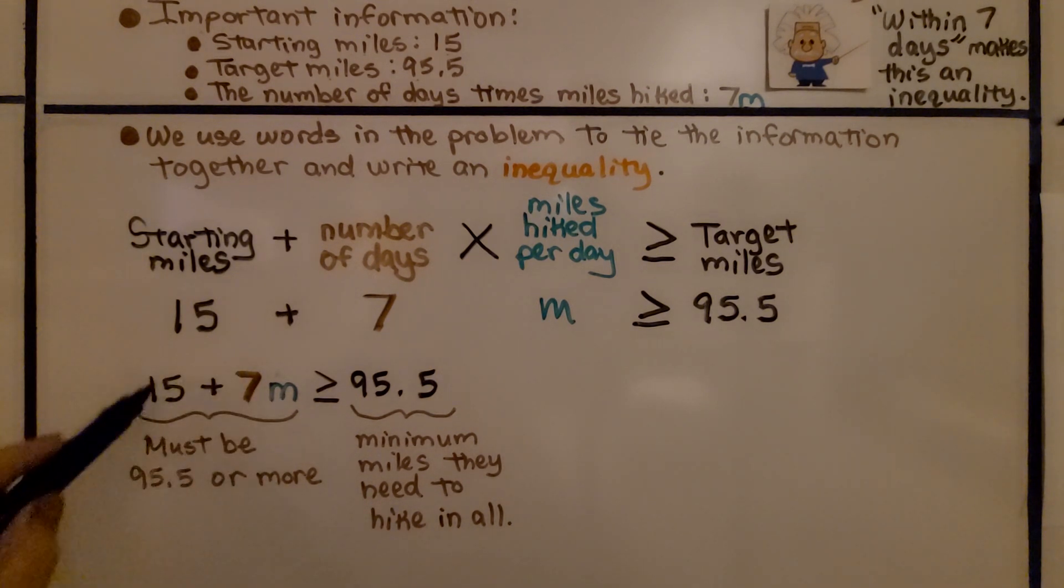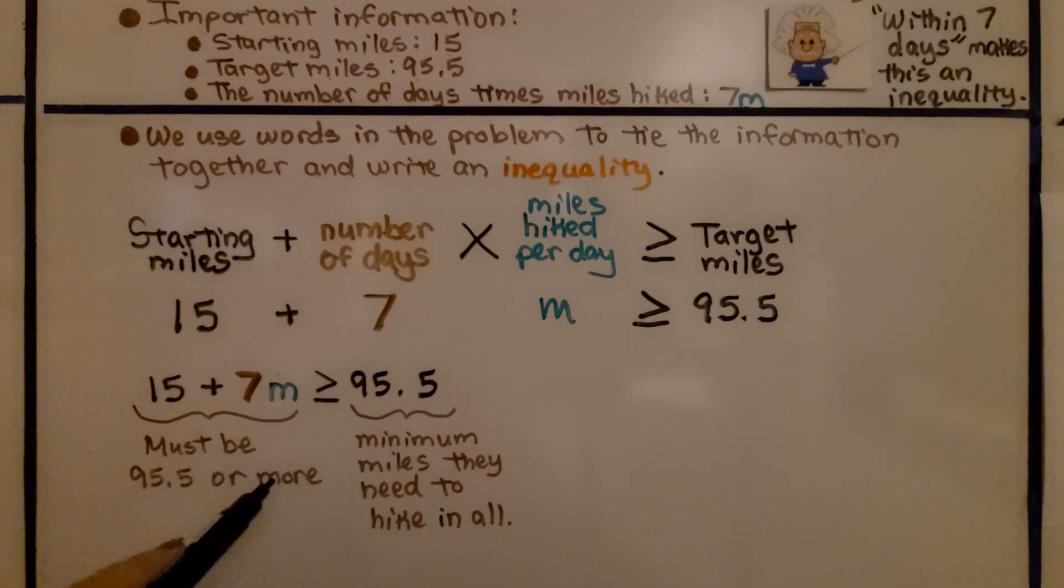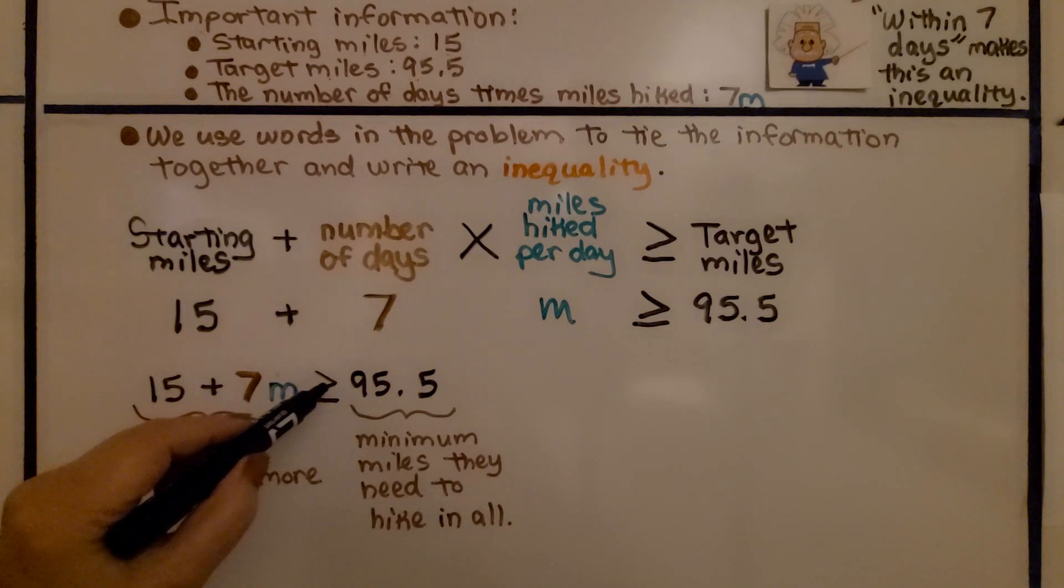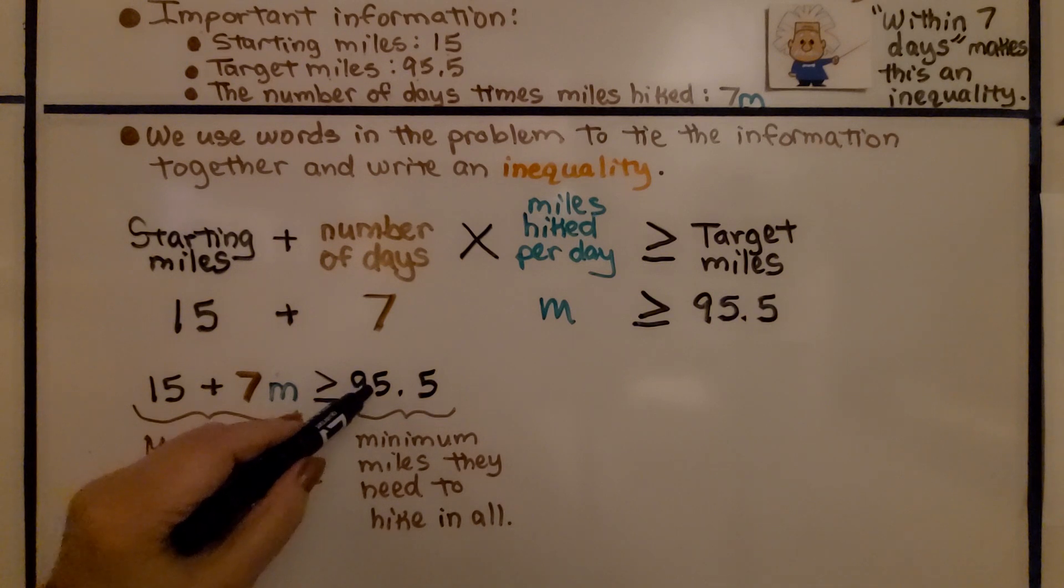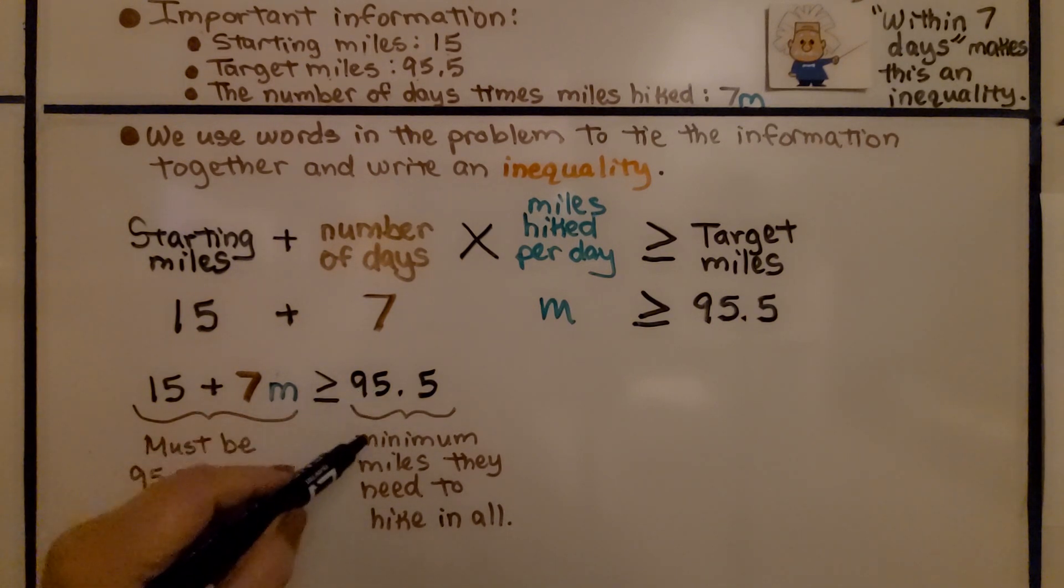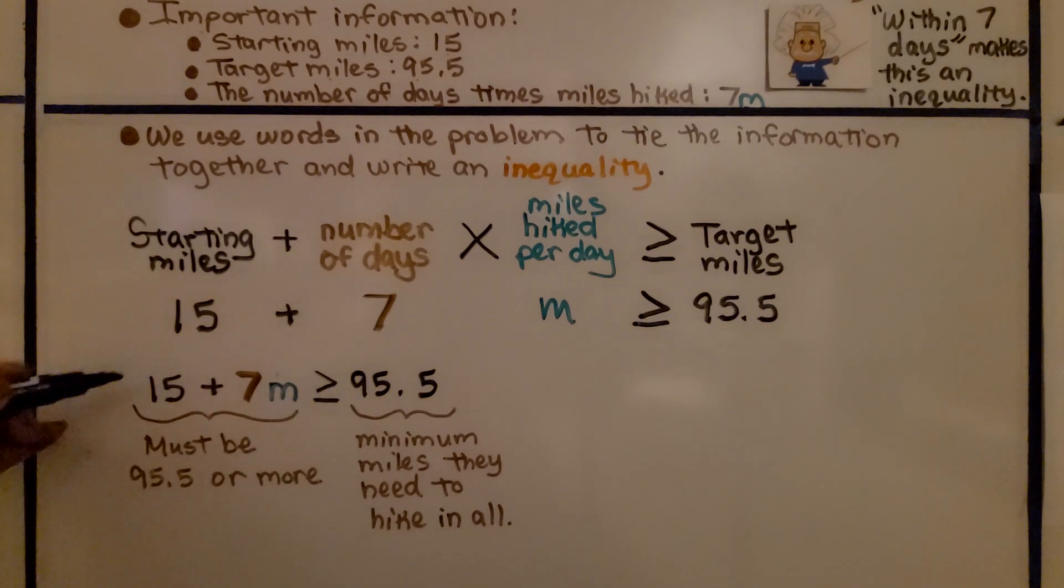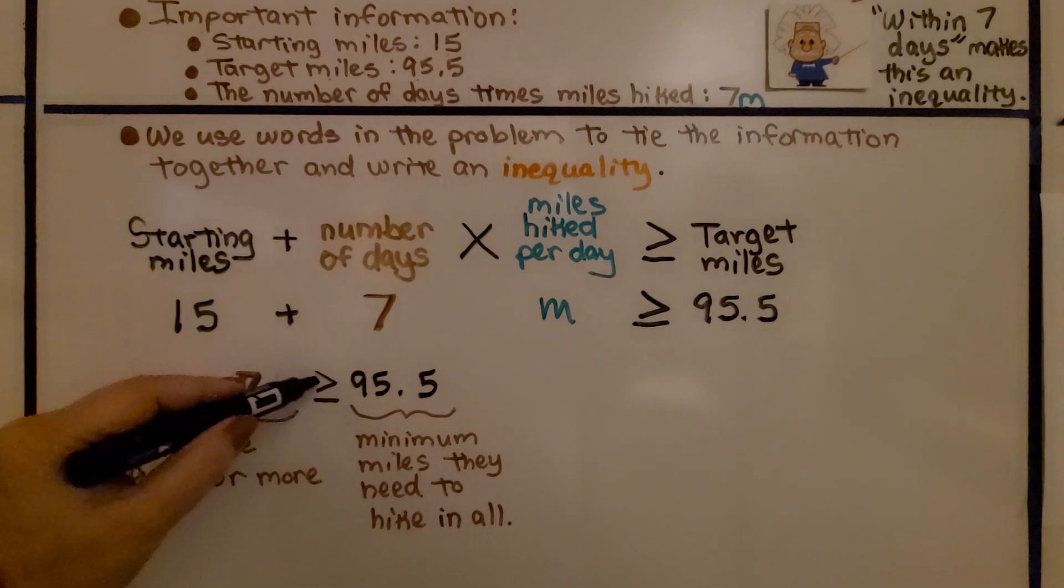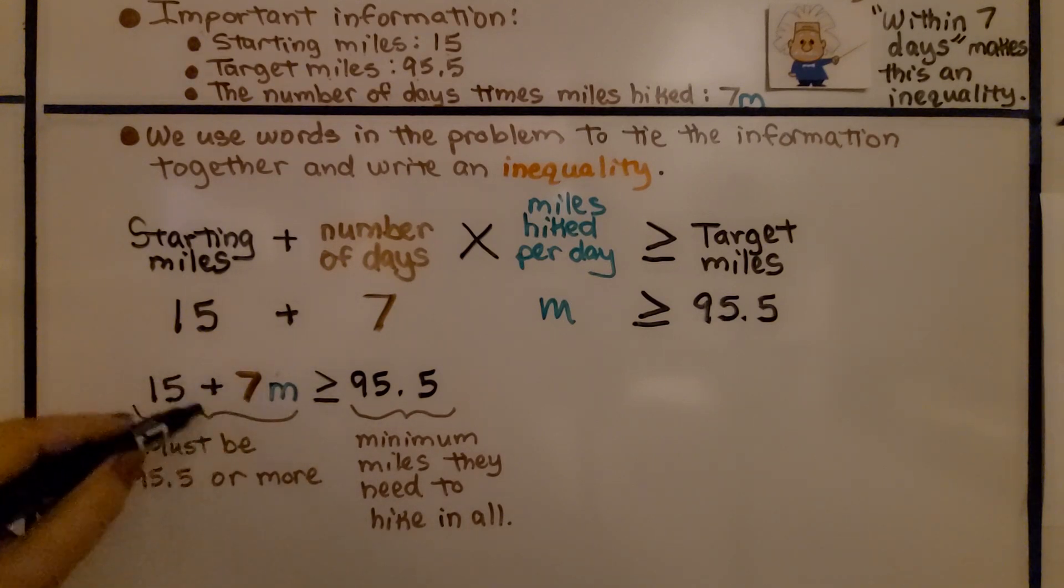This left side of the inequality must be 95 and 5 tenths or more. The right side, that's the minimum miles they need to hike in all. That's why the small part of the inequality symbol is facing the 95.5, because that's the minimum. This must be 95 and 5 tenths or more. So the large open side of the inequality symbol is facing the left side.